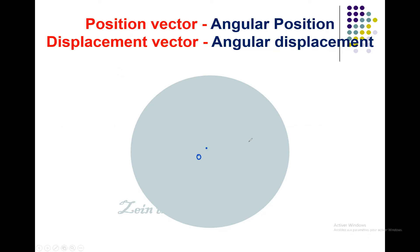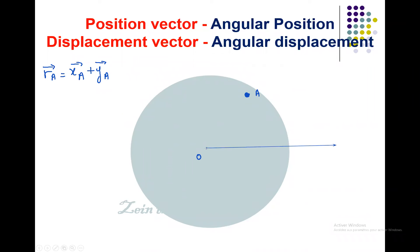I want to study the motion of each element of this object. For example, if we have a small element here — it's a part of the object, let's say particle A. For this object we can find the position vector r_A, which is equal to x_A plus y_A. First of all, you have to put x and y on the figure.